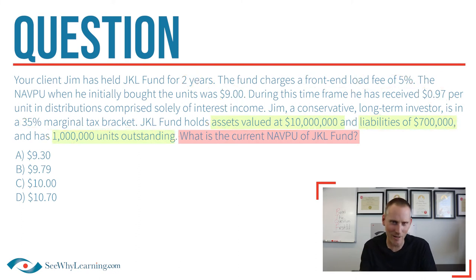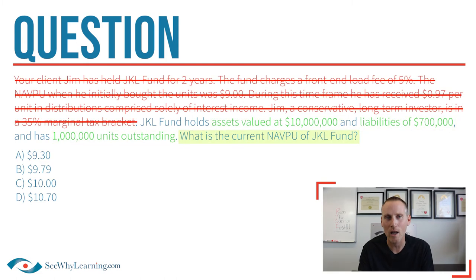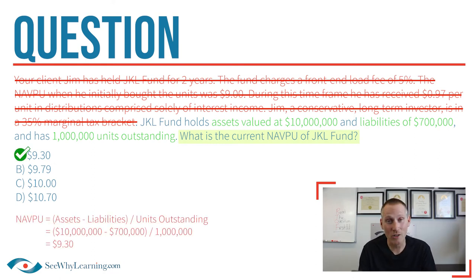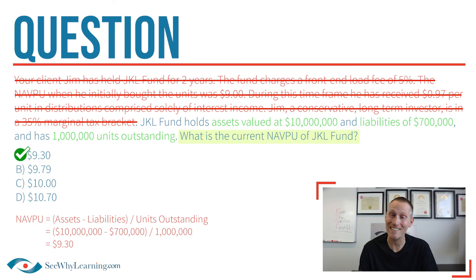So check this out. We've now stroked out and put in red all of the irrelevant information or distractors which you may be tempted to use. The little bit of information that you actually need is showing up in green. It isn't a fluke that much of the relevant information is presented after the distractors.